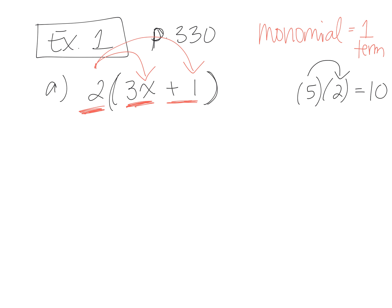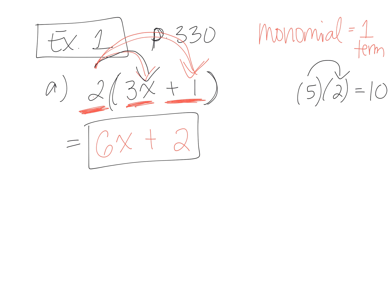I have to take the number 2 and multiply it first by the first term, which is 3x. What's 2 times 3x? 6x. Then I take 2 again and multiply it by the second term, positive 1. What's positive 2 times positive 1? Positive 2. That's the answer — done.